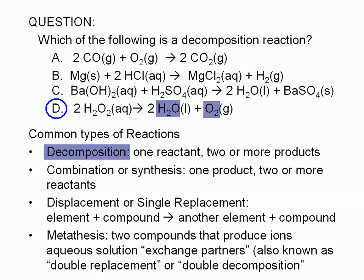Let's look at the other choices. Choice A is an example of a combination or synthesis reaction. In choice A, we have two reactants and one product.